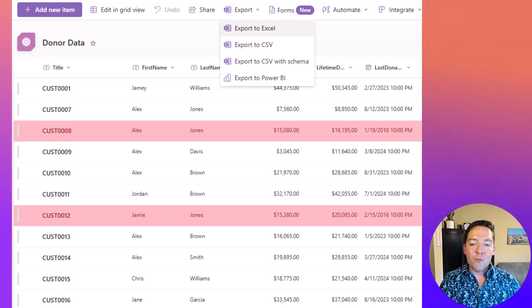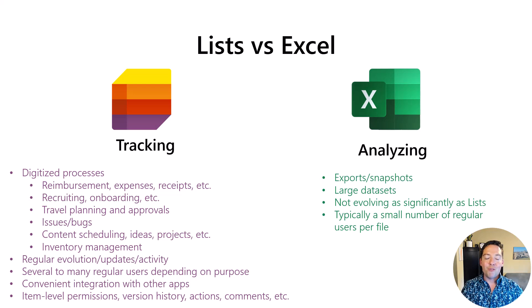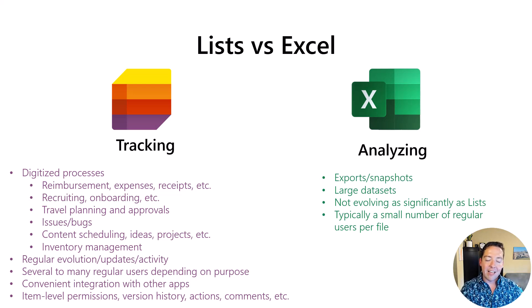To wrap things up, here's when you should use each. Use Microsoft Lists for collaboration, process tracking, and ongoing task management. Use Excel for complex data analysis, large data sets, and building custom reports. And remember, they work even better together — you can import from Excel into SharePoint, export from SharePoint into Excel, and use the best of both. When you need to do heavy analysis, choose Excel. When you need to work in it every day, track it, collaborate with peers, and have row-level security with version history, use Lists. I hope this video gave you some new ideas and helped clear up the confusion when picking between Excel and Lists. There's definitely a place for both — a time, place, and use case for each. Let me know if you have any questions in the comments. Thanks for watching.